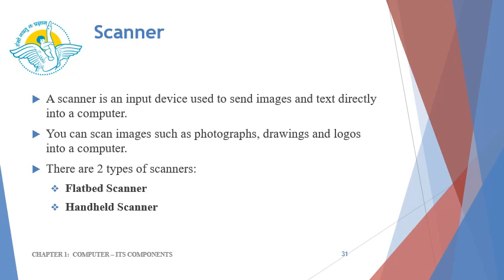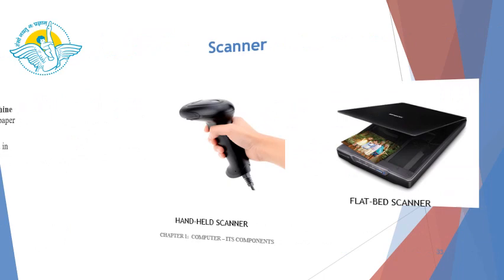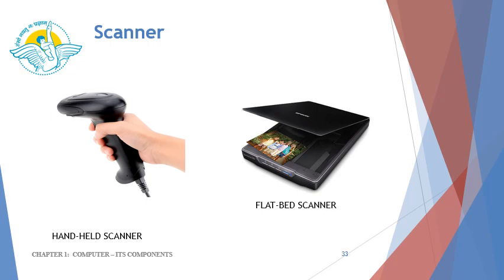Scanner — it is an input device used to send images and text directly into a computer. You can scan images such as photographs, drawings, and logos into a computer. There are two types of scanners: flatbed scanner and handheld scanner. The flatbed scanner works similar to a photocopy machine except that it creates a file in computer memory instead of a paper copy. The handheld scanner is a portable device that can be held in one hand and is dragged over the object to be scanned. It is mostly used in shopping centers. You must have seen handheld scanners at the billing counters in shopping malls.